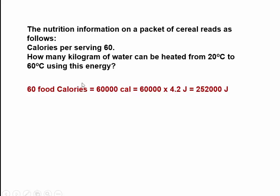60 food calories is 60,000 regular calories, because one kilocalorie is a thousand regular calories. And each calorie is 4.2 joules. So 60,000 calories is 60,000 multiplied by 4.2, which is 252,000 joules. That information is very important — you must learn how to do these kinds of unit conversion problems.